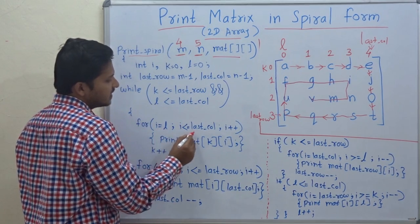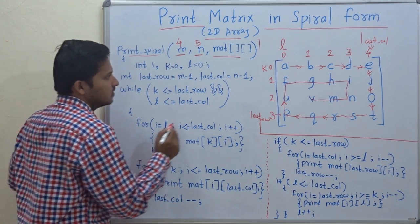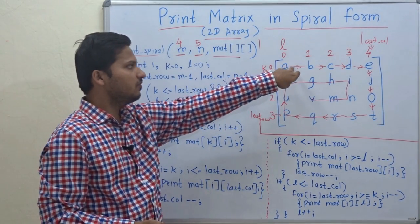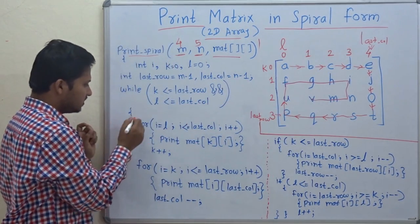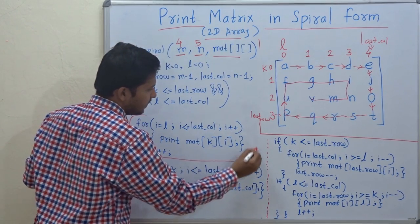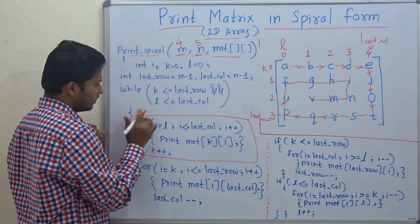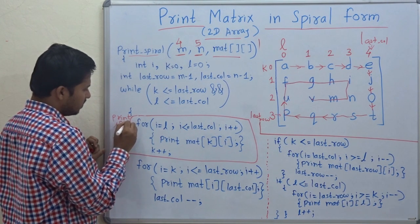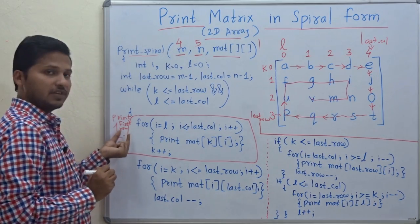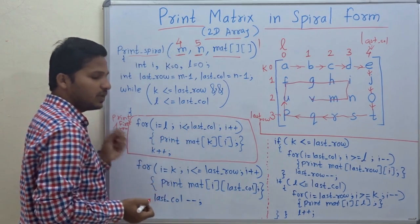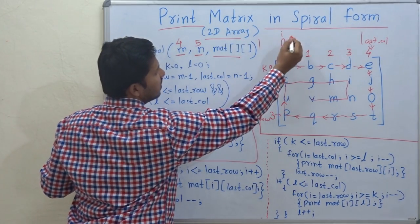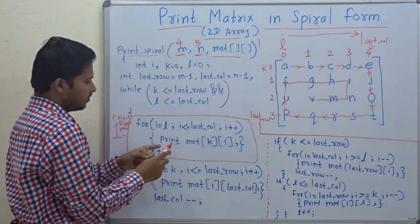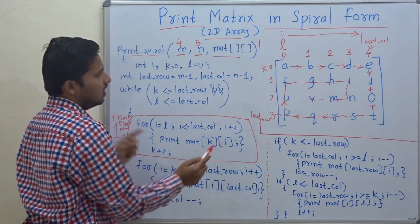Now, while K is less than or equal to last row and L is less than or equal to last column — when we print the matrix in spiral form, variable K should not go beyond last row and variable L should not go beyond last column. That is the condition. For I equal to L, I is less than or equal to last column — I will trace the first row. This block of code is for printing the first row. Print matrix of K, I.